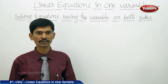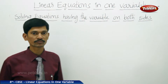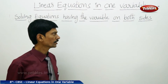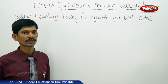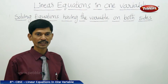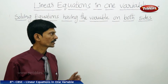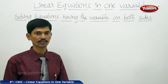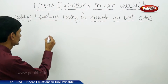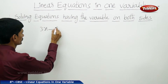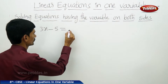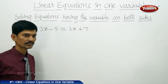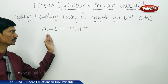So far we have solved linear equations which have variables only on one side, either on LHS or RHS. But linear equations may not always be in the same form. Some linear equations may contain variables on either side — on both LHS and RHS. For example, 3x minus 5 equals to 2x plus 7. This linear equation has variables on both sides.